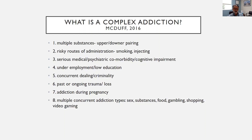Risky routes of administration also make cases more complex. The speed of onset of action of a substance is what makes it most addictive, and when someone is smoking or injecting, onset is very rapid because the drug gets to the brain quickly. There's also a lot of medical comorbidity related to injecting and smoking. That leads to the next area of complexity: serious medical and psychiatric comorbidity and cognitive impairment. It's very common for people with addictions to have psychiatric comorbidity.